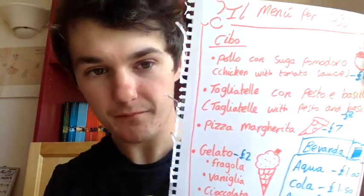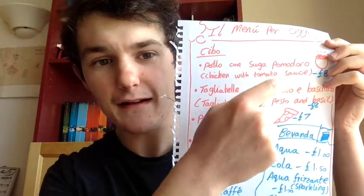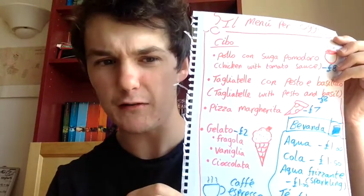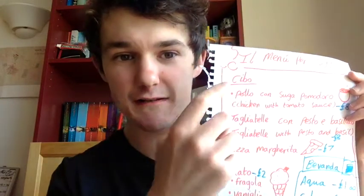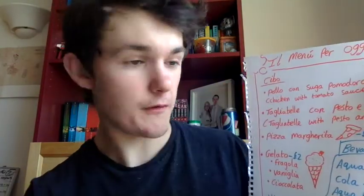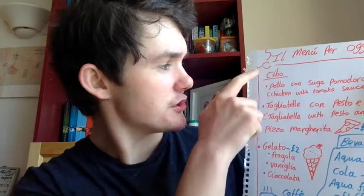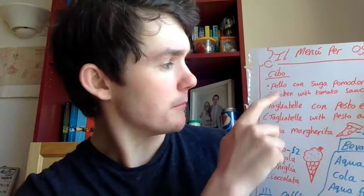So, after that, if you're feeling a bit arty and you've managed to find some pens of those colours, I would like you to research some Italian food and drink items and then make a little menu. You can choose any of your favourite items to put on a menu and create a menu like this. On here I've written some words that you might not understand and some words that you might recognise, and I've decorated it with pictures. It says: 'Il menu per oggi', or the menu for today. 'Cibo', which means food.